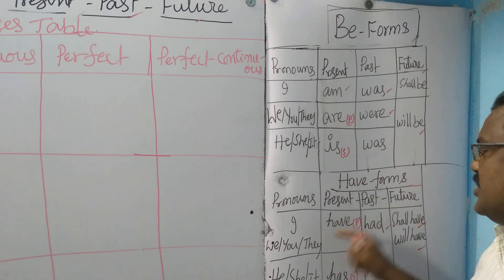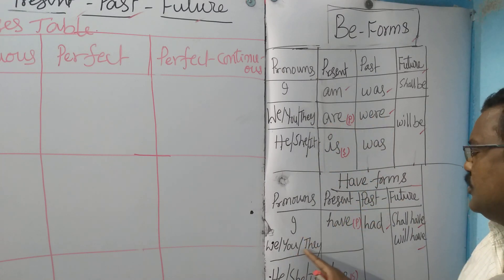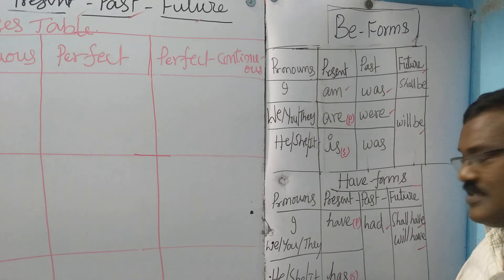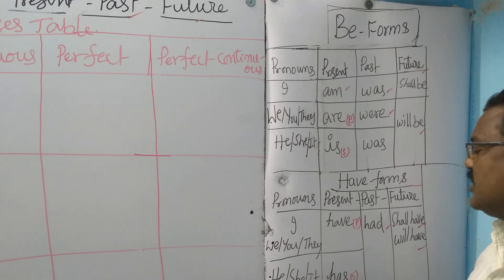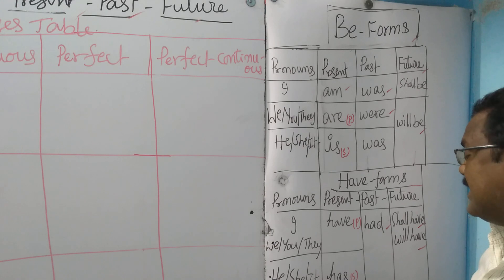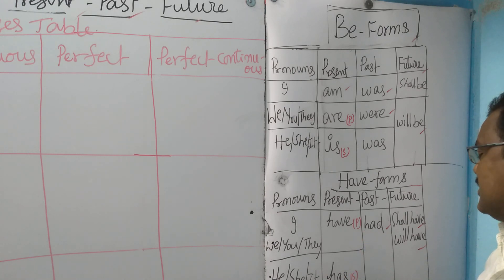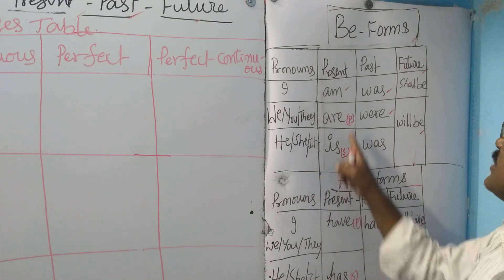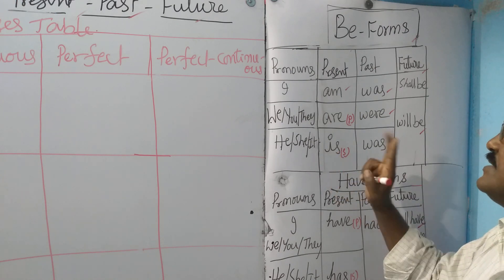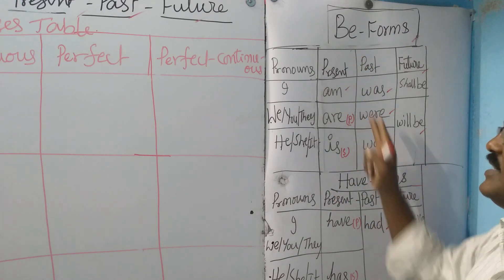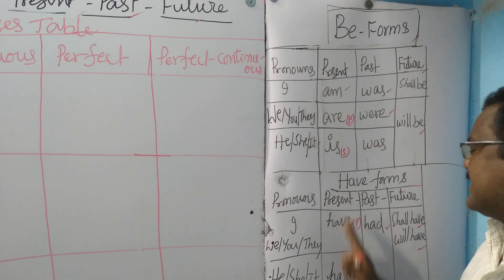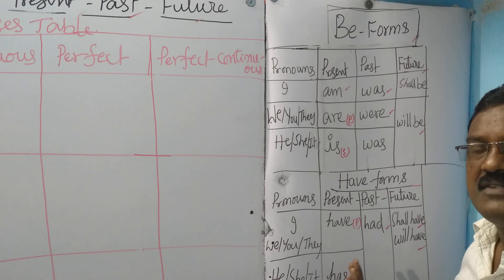Have forms: I, we, you, they — plural subjects — take 'have'. He, she, it — singular subjects — take 'has'. After singular subject, 'has' — and the verb ends with 'S'. So in simple present tense, singular subject means the verb ends with 'S' — that is called the singular verb.